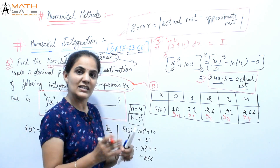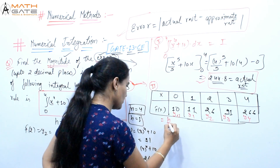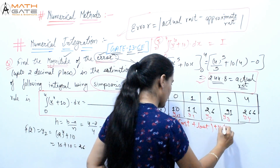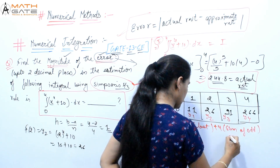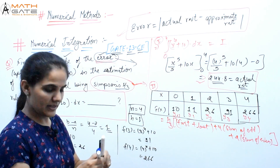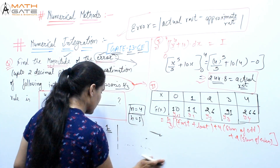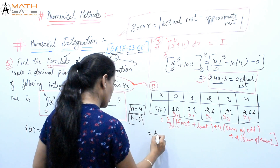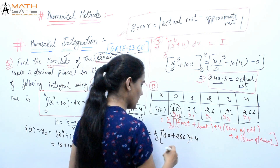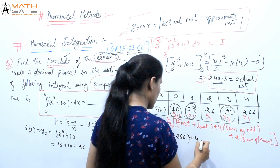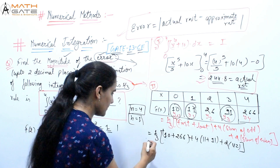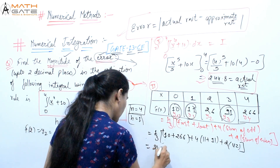Now applying Simpson's 1/3rd formula: (h/3)[first + last + 4×(sum of odd terms) + 2×(sum of even terms)]. So this becomes (1/3)[10 + 266 + 4×(y₁ + y₃) + 2×(y₂)]. That is (1/3)[276 + 4×(11 + 91) + 2×26]. After solving, the answer is 245.33.